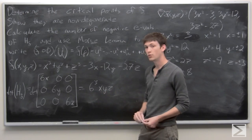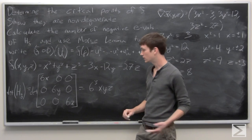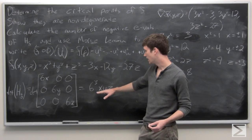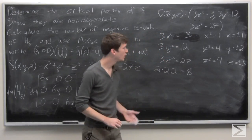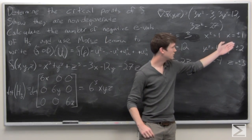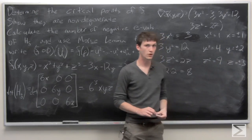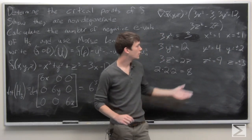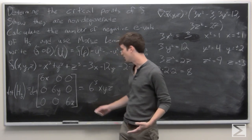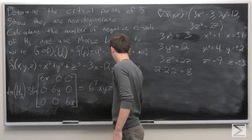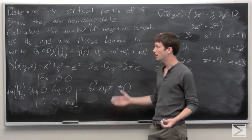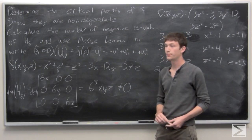The determinant equals zero only if one of the components x, y, or z is zero. But at our critical points x = ±1, y = ±2, z = ±3, none of the components are ever zero. Therefore the determinant is never zero at our critical points, so all eight critical points are non-degenerate.